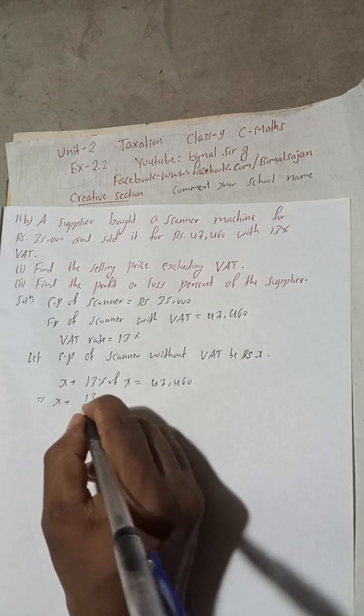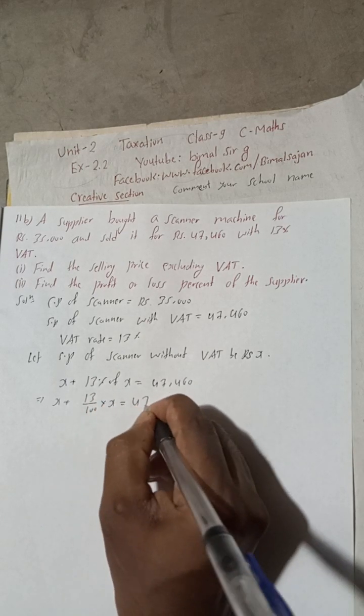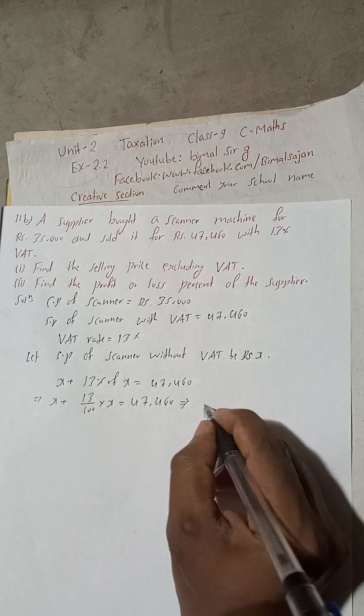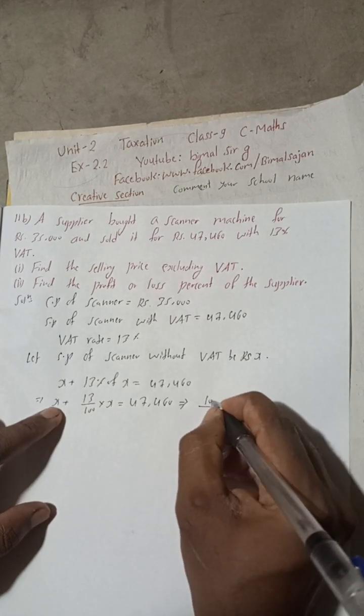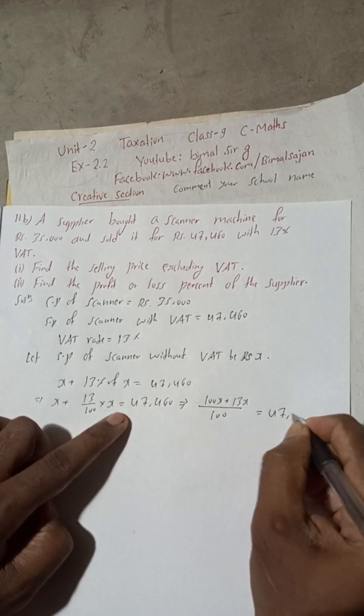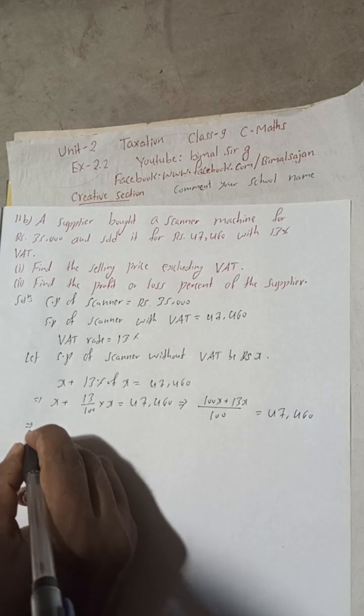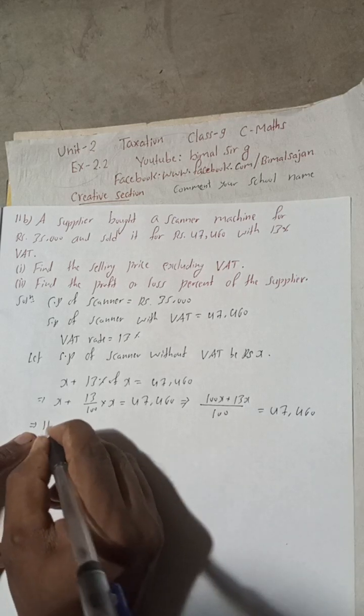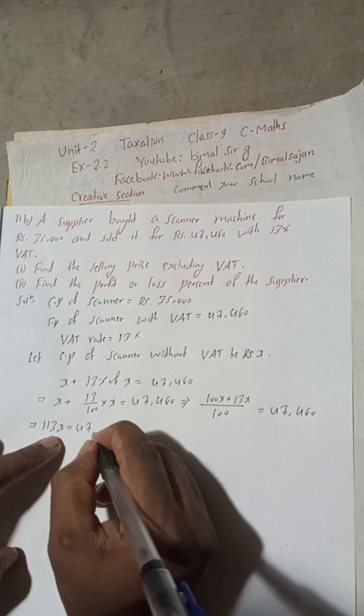x plus 13%, so divide by 100 into x equals 47,460. This implies here LCM is 100. So 100x, x is here 100x plus 13x is equal to 47,460.